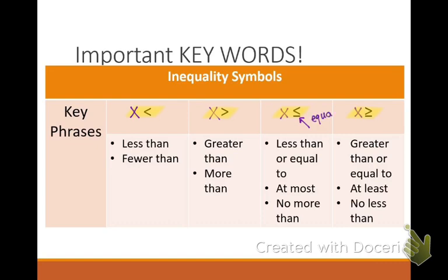That line underneath means equal to — write that down. So now let's go through and read our keywords. In the first column, less than and fewer than — that's pretty self-explanatory. So if a number has to be less than or fewer than, it needs to be closed off towards the x. If it needs to be greater than or more than, that means it needs to be opened up towards the x.